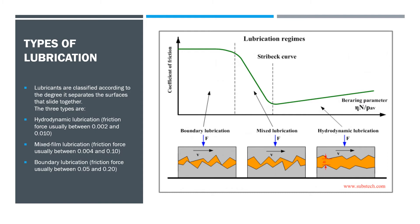The second type is mixed film lubrication. It is when the surfaces are intermediately in contact, which leaves mild wear and tear over long periods of time. The coefficient of friction during this lubrication is usually between 0.004 and 0.1. The final type is boundary lubrication, which has continuous and extensive surface contact, but due to constant lubrication it reduces the friction and wear and tear of the system. The coefficient of friction for boundary lubrication is usually 0.05 to 0.2.